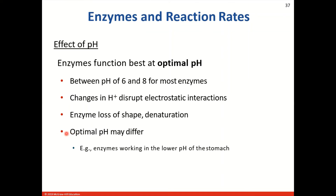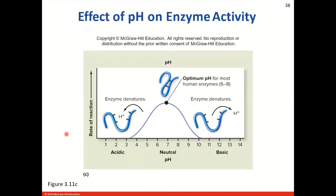Optimal pH can differ between tissues, particularly when we look at the stomach, where the pH is going to be significantly lower than what we see with normal blood. Here we see the effect of pH as opposed to temperature. Here we have a more acidic solution on one end, optimal pH right around neutral on another, and as we become more alkaline or more basic, we start to see bonds of this particular molecule breaking. When it is too acidic or too alkaline, the bonds become broken or damaged, and that starts to lose the 3D conformation of that particular molecule.